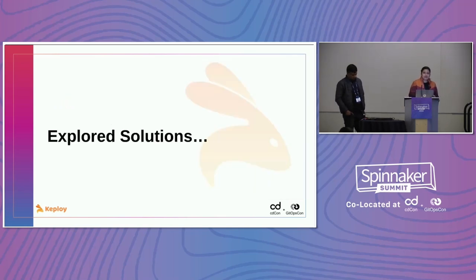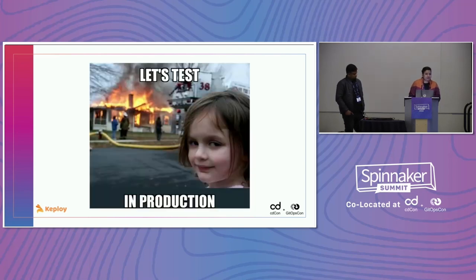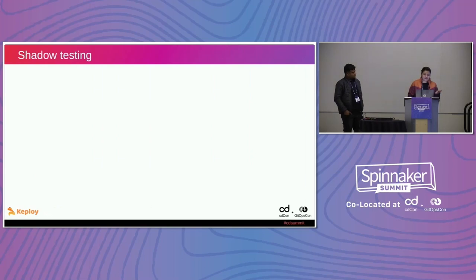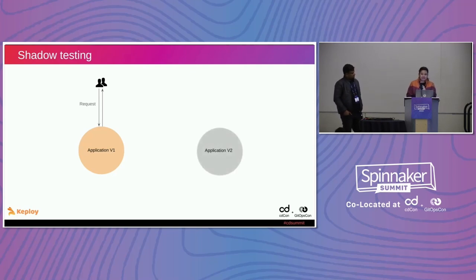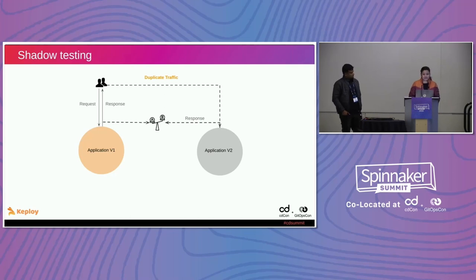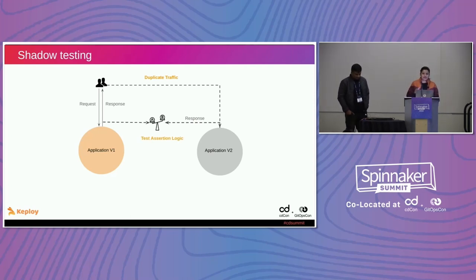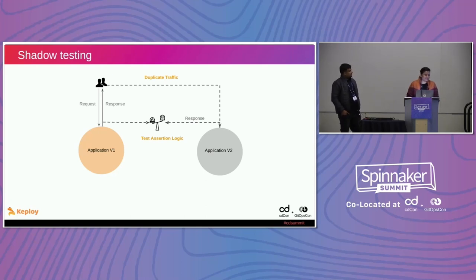I'll give a brief about the different solutions we explored and their limitations. We started with testing in production, because we wanted our test data to be just like production. If you want to test in production, you can do shadow testing: your application is running and serving user traffic, you put a new version V2, and replicate the same traffic via some service mesh. You assert the responses of both the existing and new deployment — if they match, it's working fine. But it's not that simple: it works fine with stateless applications.